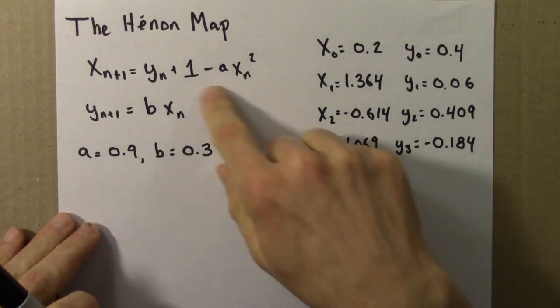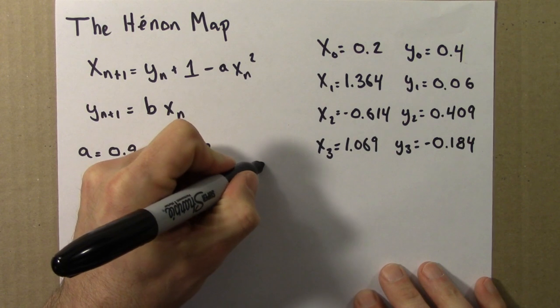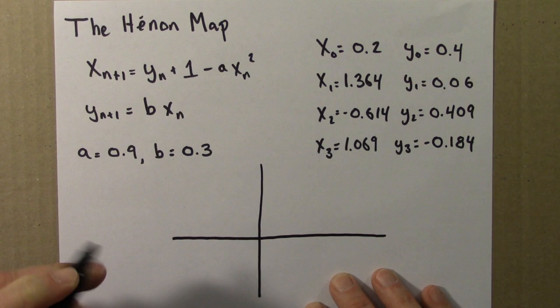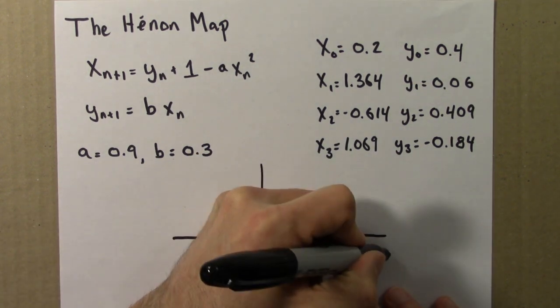So for the logistic equation, we had a final state diagram that was one-dimensional. Here, we could have a diagram that would be two-dimensional.